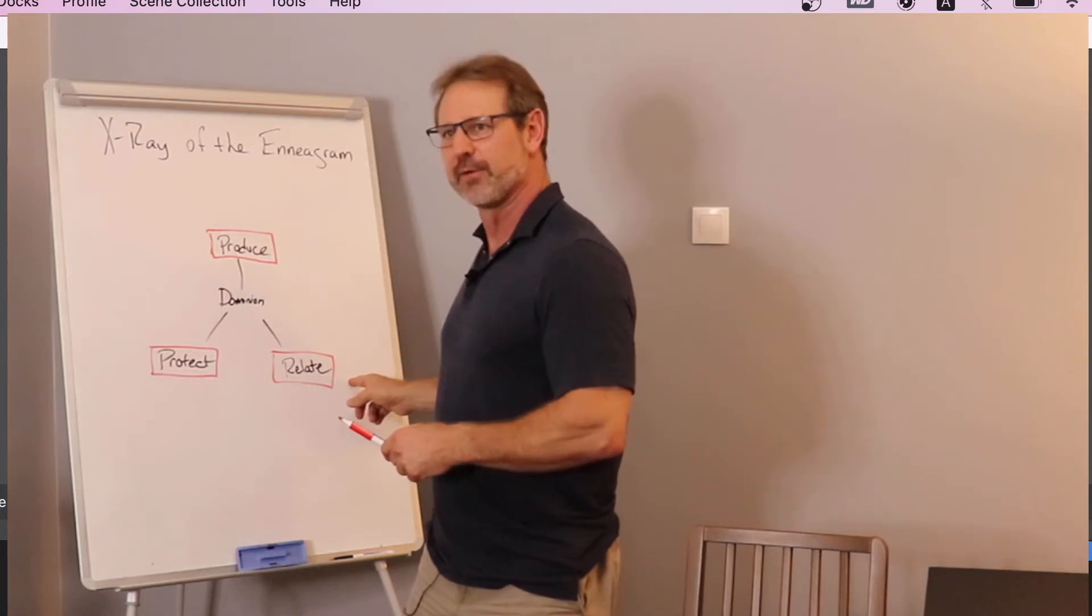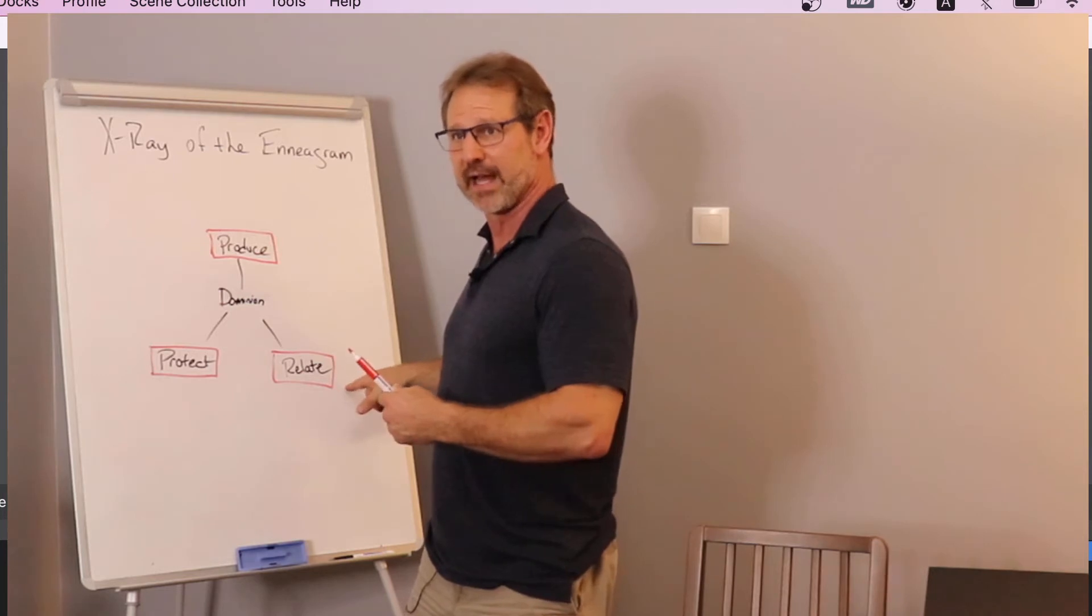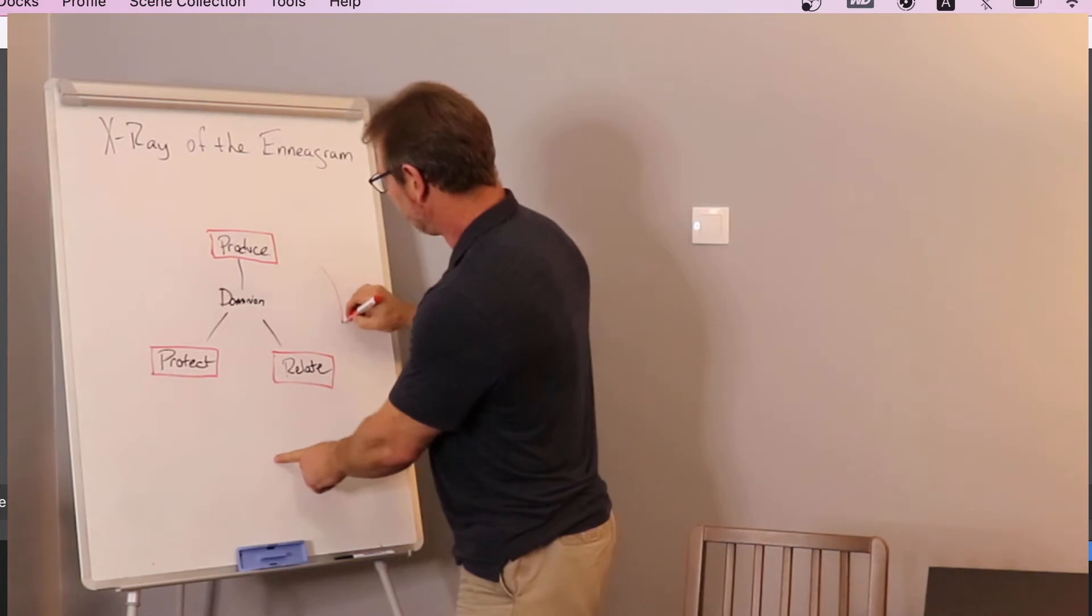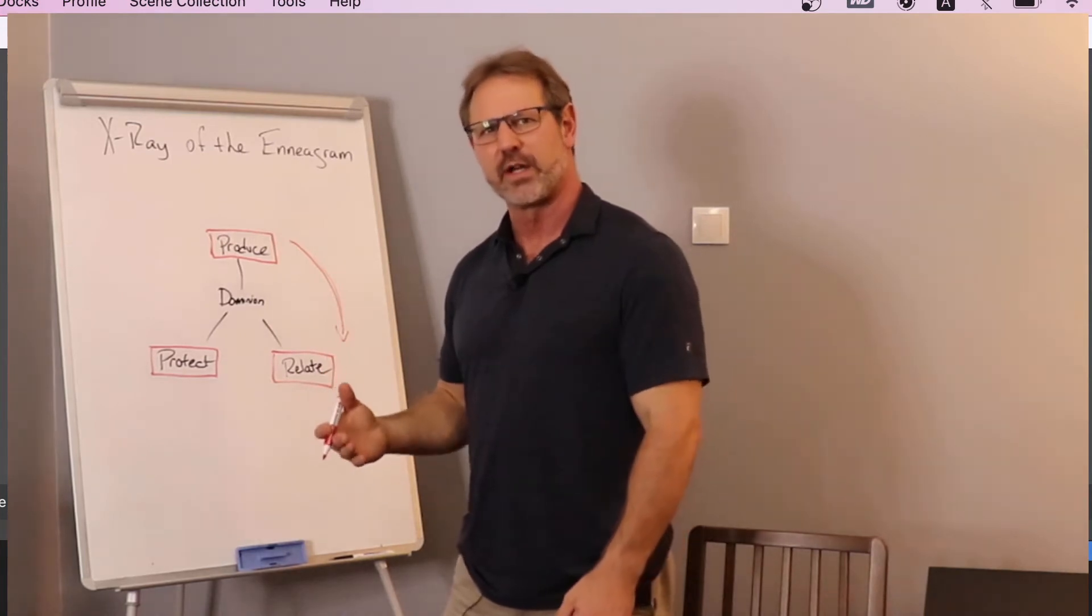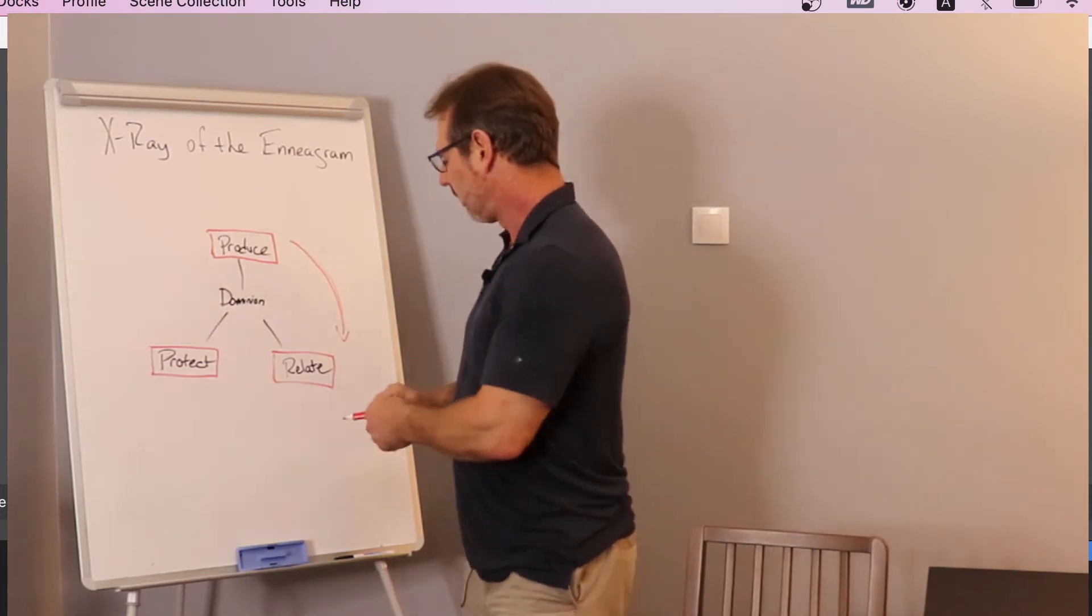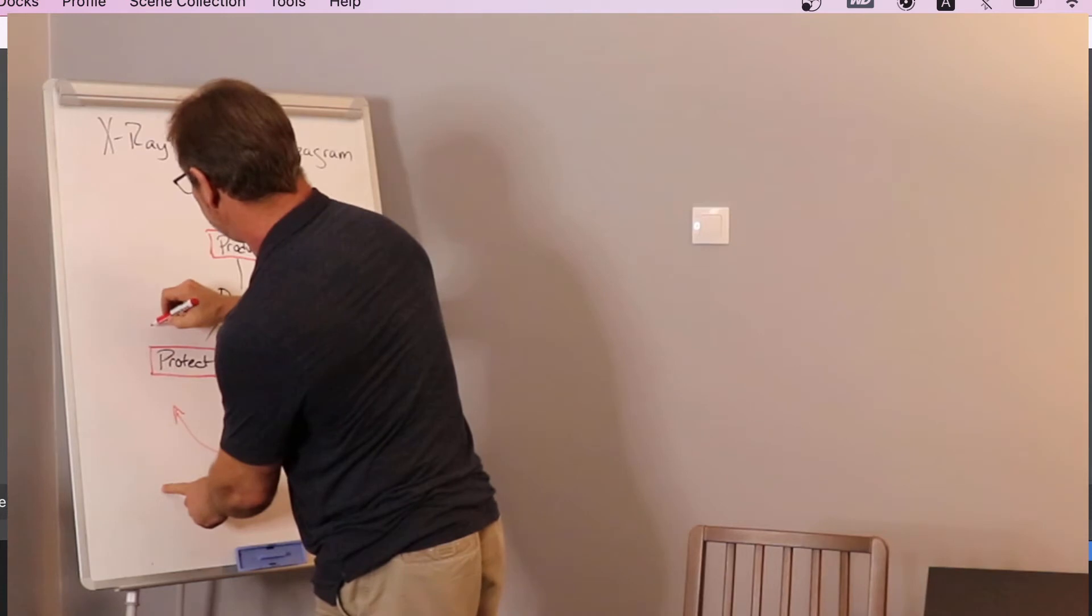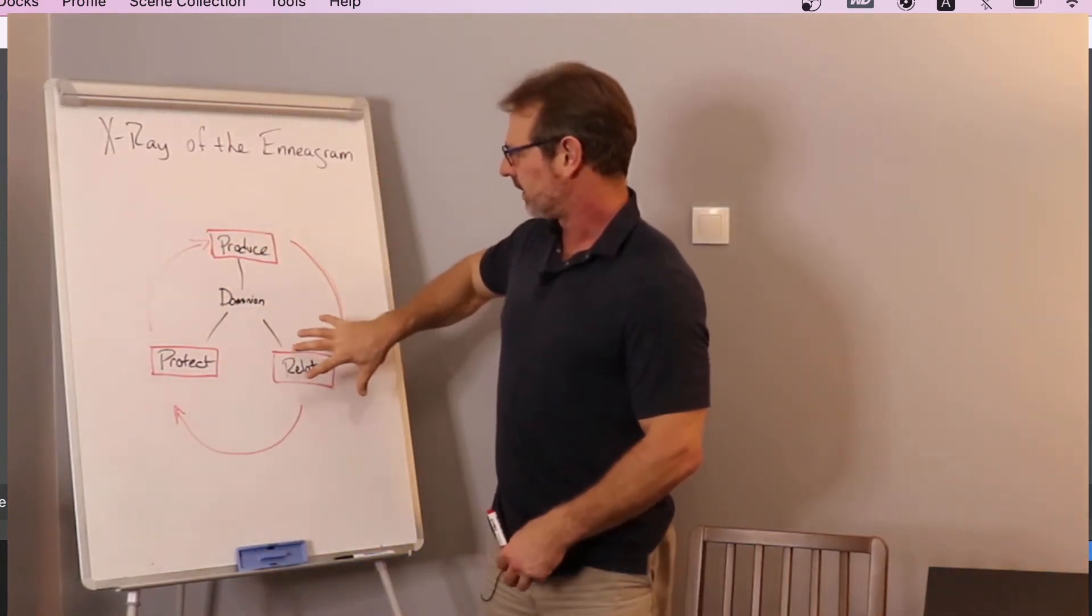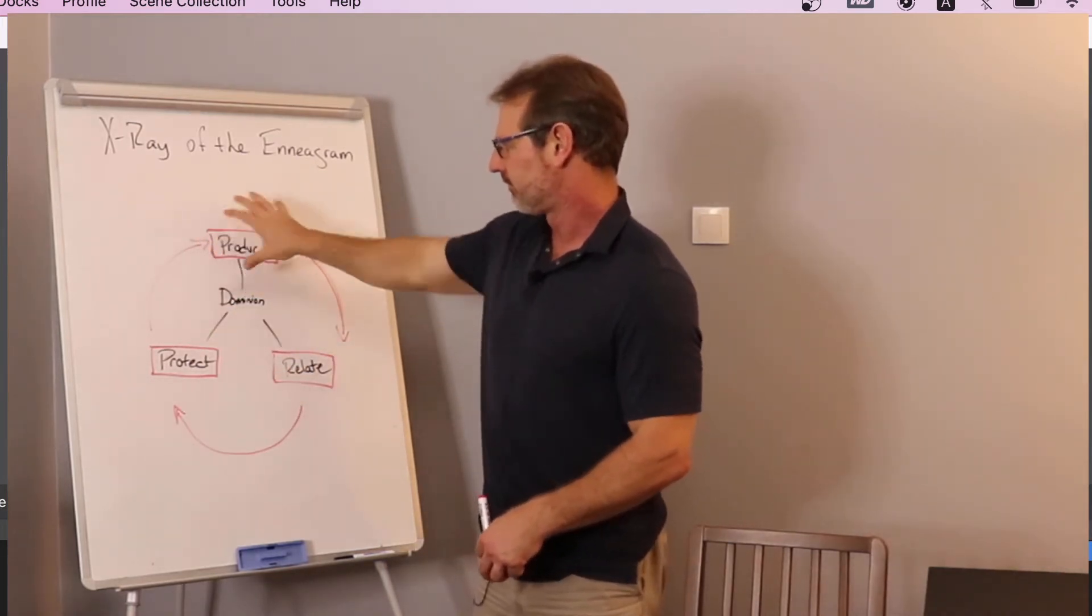You'll notice we put this together and the creation direction of this, so to speak, the way they're introduced is going counterclockwise. We're put in the garden to produce and protect and relate. But we also notice that when sin enters in, they're changed, but they're changed in a clockwise pattern. It gets twisted in a certain way.